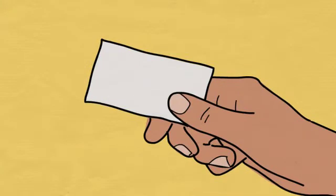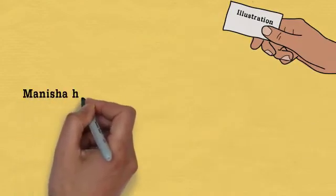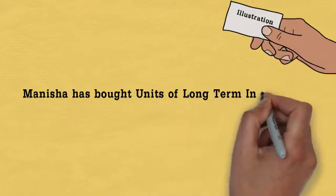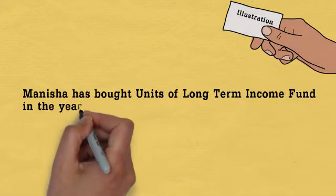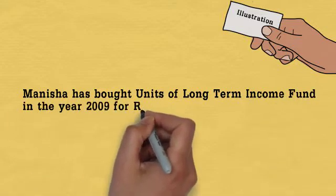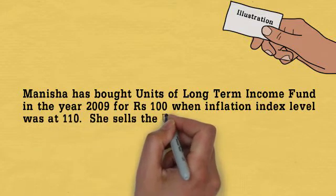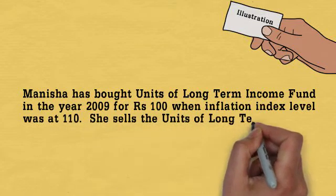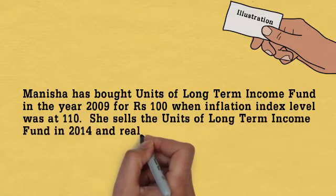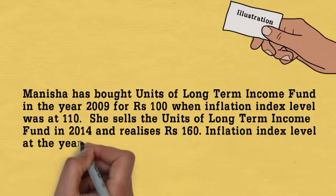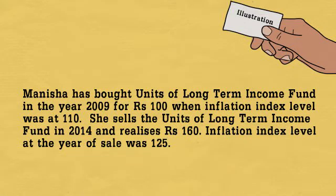Let me give you an example. Manisha bought a unit of a long-term income fund in the year 2009 for Rs. 100, when the inflation index level was at 110. She sells the unit in 2014 and realizes Rs. 160. The inflation index level at the year of sale was 125.